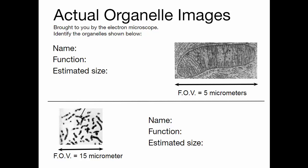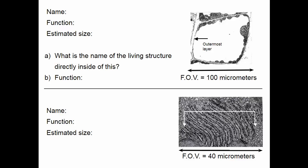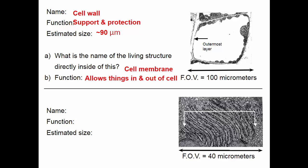What I want to show you is what these organelles actually look like in a transmission electron microscope. This is a mitochondria — it's shaped like a V and has folds inside. These are chromosomes. This whole thing is the nucleus: the outer layer is the nuclear membrane, the inside is the nucleolus. This is a plant cell — you can see it has a thick outer layer, which is the cell wall.